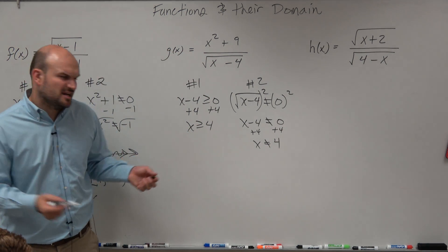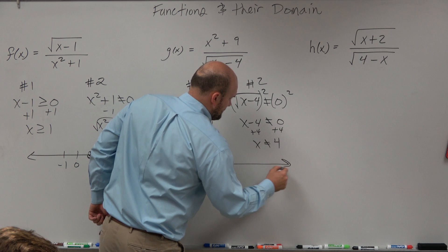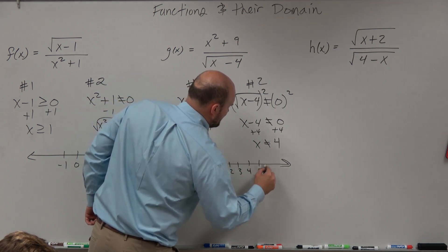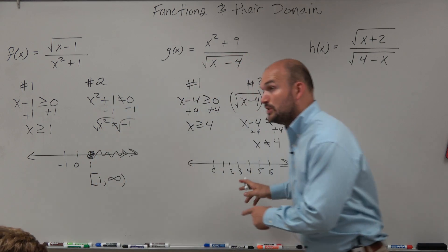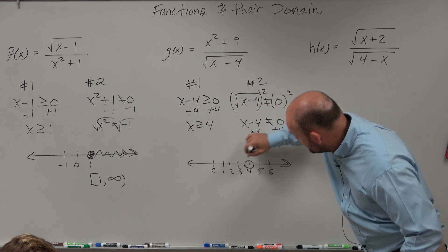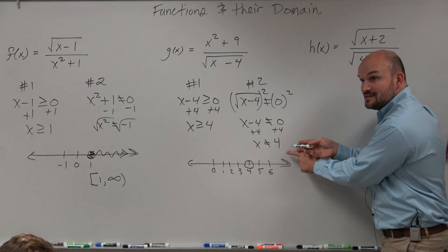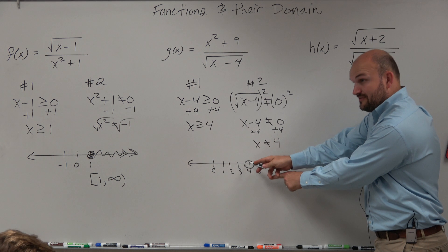So now, let's do the number line again. 0, 1, 2, 3, 4, 5. OK, so we go to 4 and create a circle. Based on this, is 4 included? Yes. But over here, 4 is not included, so we're going to leave it open.